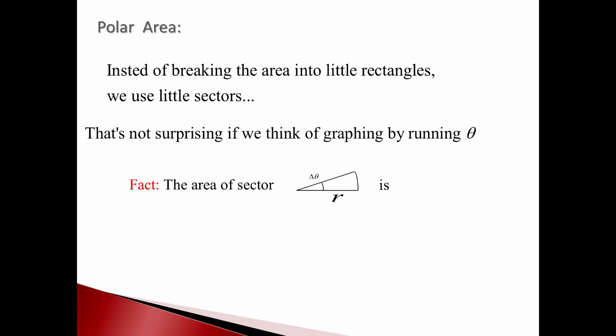What's the area of a pizza slice? You take the area of a whole pizza and multiply by the percentage of the pizza you have in your slice. The area of a whole circle is πr². The whole circle would be 2π for theta going all the way around. We just have delta theta, so the percentage is delta theta out of 2π. Taking πr² times delta theta over 2π — the π's cancel — so we're left with ½r² delta theta. That's the area of a sector.